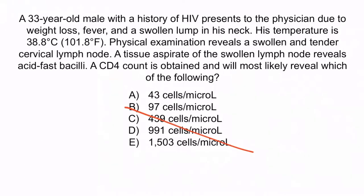So again, the correct answer is A: 43 cells per microliter. With that, we've covered everything you need to know about MAC, Mycobacterium scrofulaceum, and Mycobacterium marinum.